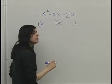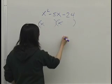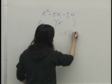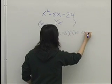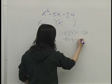The next thing we want to do is look for factors of minus 24 that sum to minus 5. Well, if we times minus 8 by positive 3, it gives us negative 24. And if we add negative 8 and positive 3, it gives us negative 5.